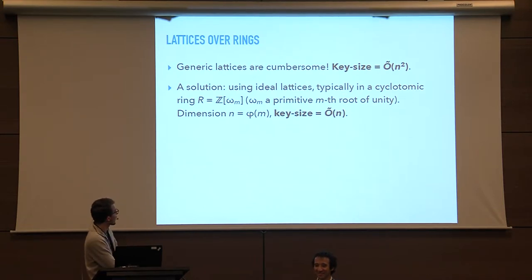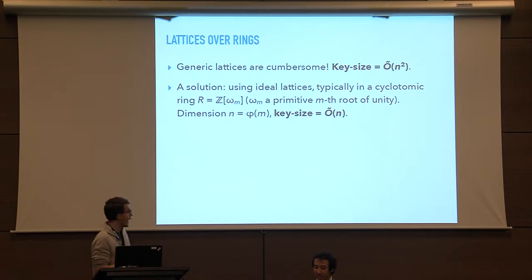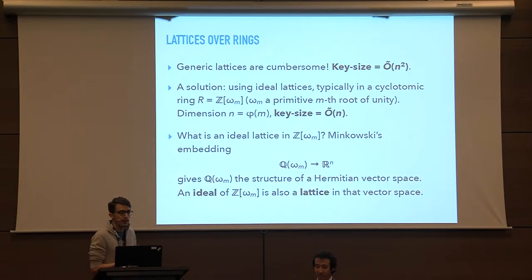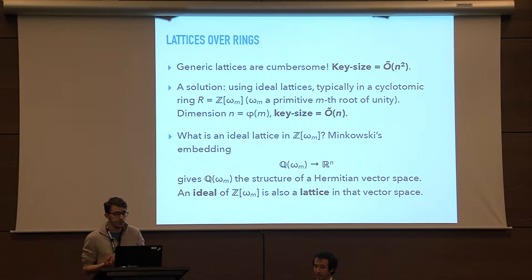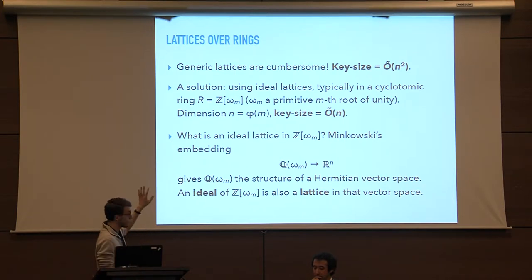We're going to work with what we call ideal lattices, typically in a cyclotomic ring — a ring of the form Z adjoint omega_m, where omega_m is a primitive m-th root of unity. The dimension here will be n equals phi of m, where phi is Euler's totient function, which brings the key size down to big-O of n. Minkowski's embedding of the cyclotomic field into the n-dimensional real vector space gives it the structure of a Hermitian vector space. Ideals in that ring are also lattices in that vector space, and these are what we call ideal lattices.